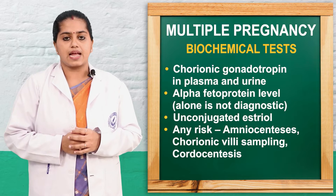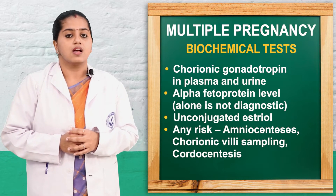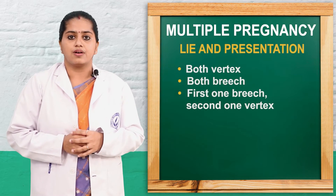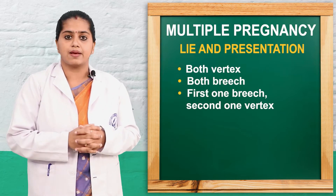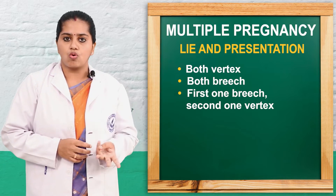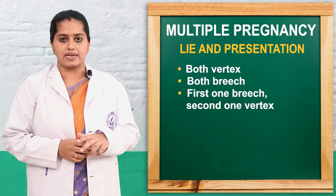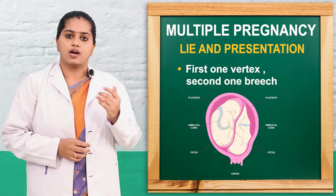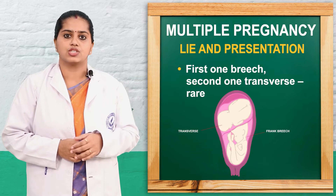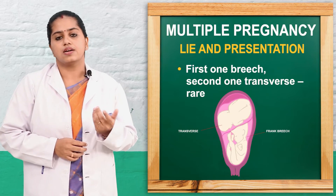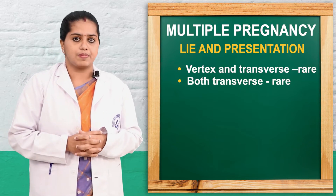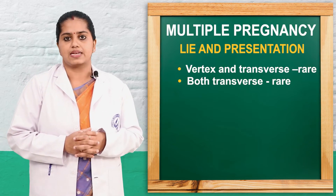If there is any risk, amniocentesis, chorionic villus sampling can be performed. Next we will see lie and presentation. Both vertex, both breech, one breech and one vertex, one vertex and one breech, breech and transverse, vertex and transverse, both breach, both vertex, and one or both transverse — these are the various lie and presentation patterns of multiple pregnancy, mainly twins.